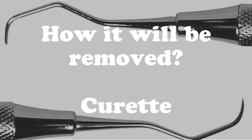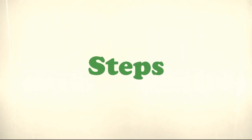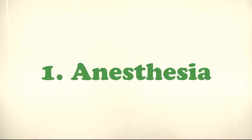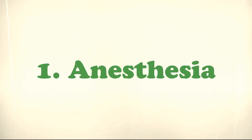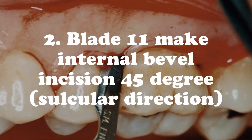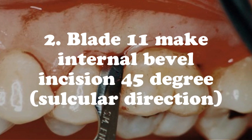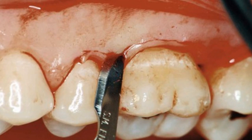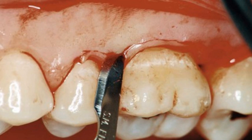Now, what are the steps for performing crown lengthening? First, we need to give anesthesia — infiltration for the upper arch and a block for the lower. Then we use blade number 11 to make an internal bevel incision at 45 degrees in a circular direction, as shown in the picture.